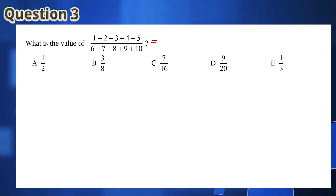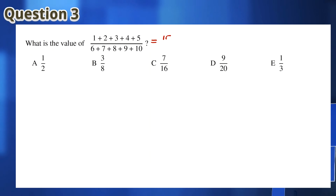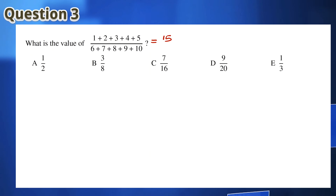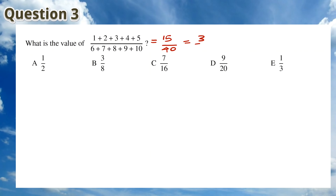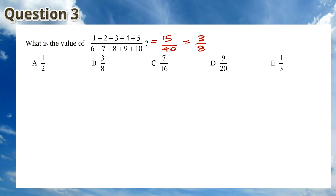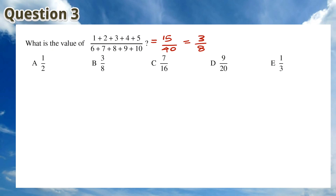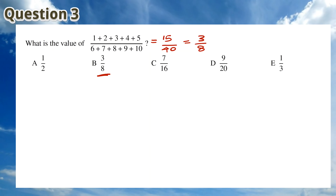For Question 3, the numerator adds up to 15 and the denominator adds up to 40. This gives a fraction 15 over 40, which can be simplified to 3 over 8. This means that the answer is B.